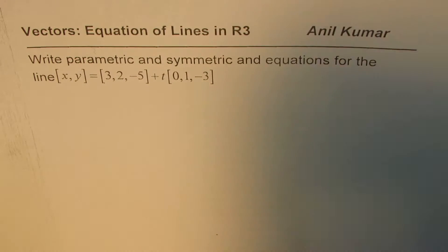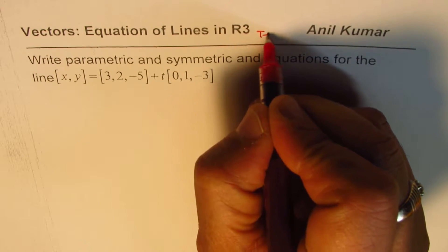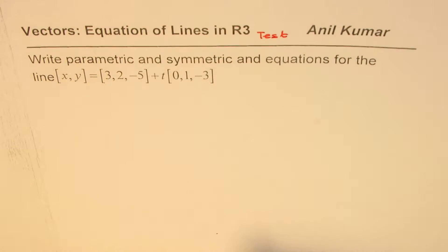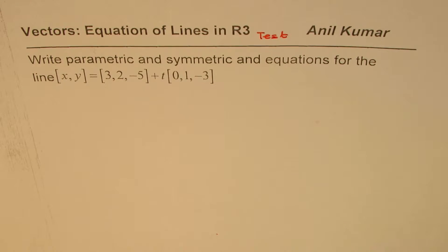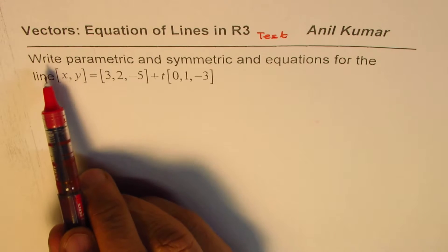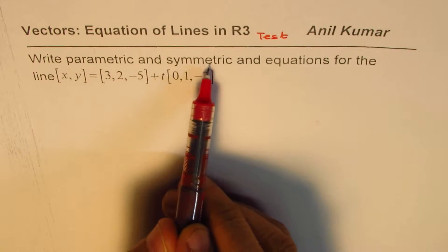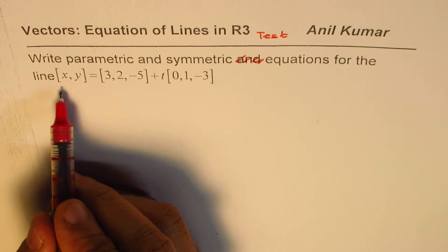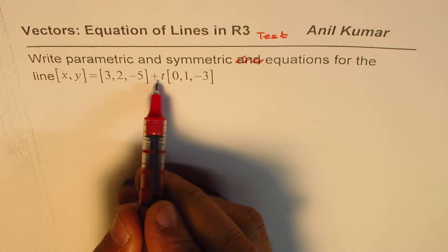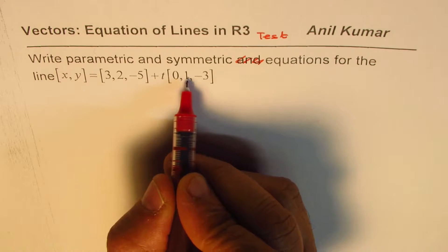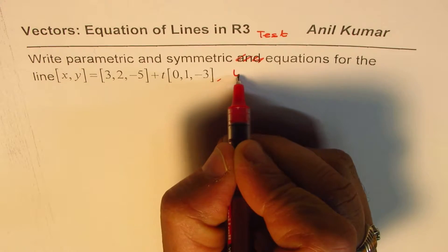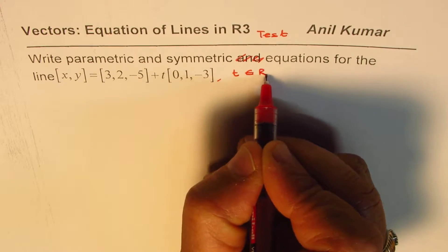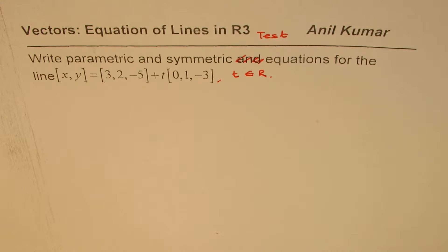I'm Anil Kumar, and this is a review test for you to write equation of a line in different forms. The question here is, write parametric and symmetric equations for the line x, y equals (3, 2, -5) plus t(0, 1, -3), where t belongs to set of real numbers. So that's the question for you.